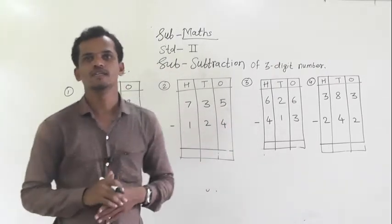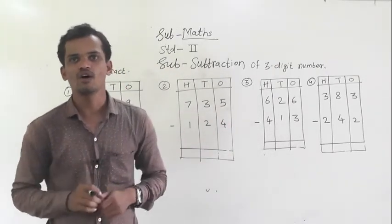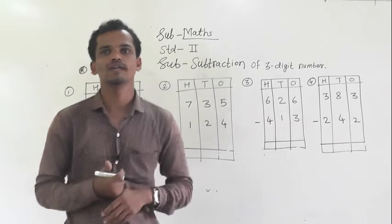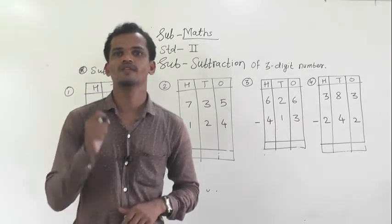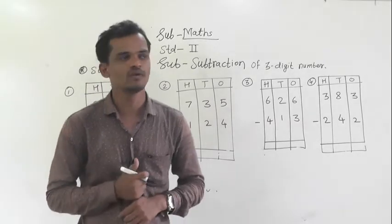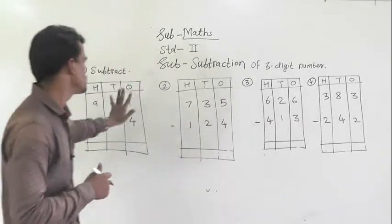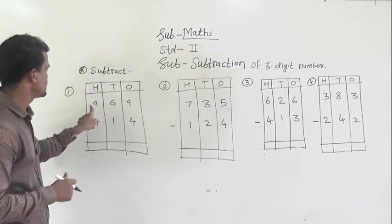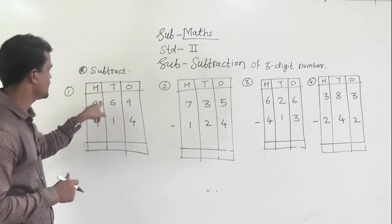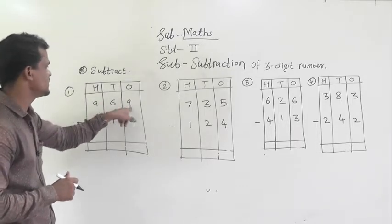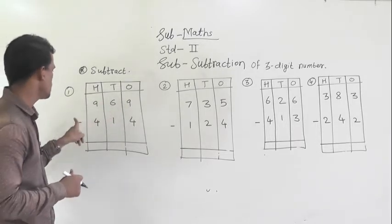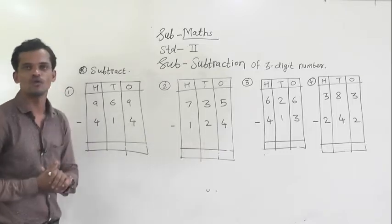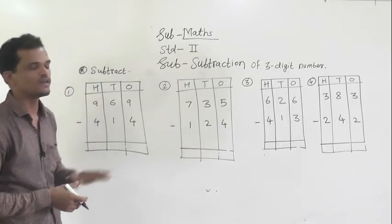Dear students, today we will see the subtraction of 3-digit numbers without regrouping, means without borrowing. See the first example is 969 minus 414.